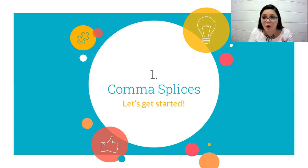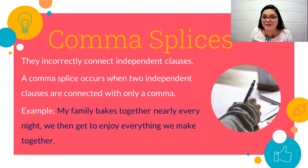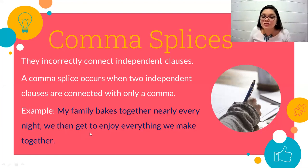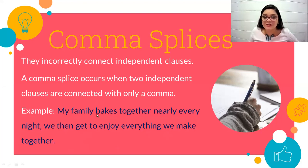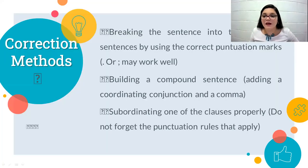Now for today's video, this is the core, this is the essence — we want to study comma splices. What are comma splices? They incorrectly connect independent clauses. A comma splice occurs when two independent clauses are connected with only one comma. For example: 'My family bakes together nearly every night, we then get to enjoy everything we make together.' What is the problem? Remember, you cannot join and divide ideas using only commas. A comma is not strong enough to do the job of making one grammatical sentence out of two.